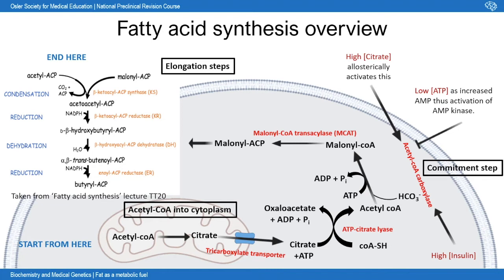At high acetyl-CoA concentrations, increased production of citrate occurs, which escapes into the cytoplasm and undergoes fatty acid synthesis. Acetyl-CoA enters the cytoplasm by first combining with oxaloacetate — a Krebs cycle metabolite — to form citrate, which is transported through the tricarboxylate transporter into the cytoplasm. Once there, ATP-citrate lyase converts it back into acetyl-CoA, consuming an ATP molecule in the process.